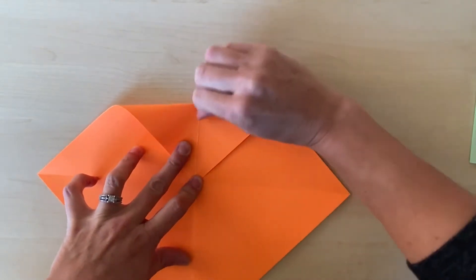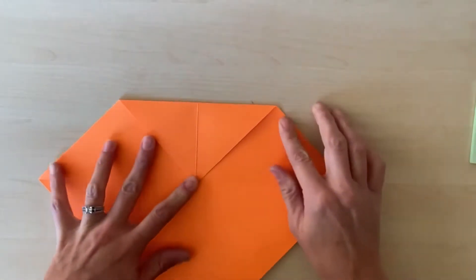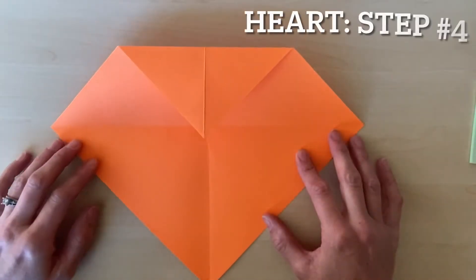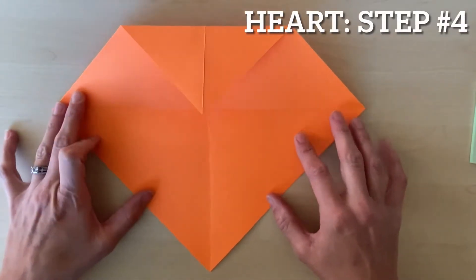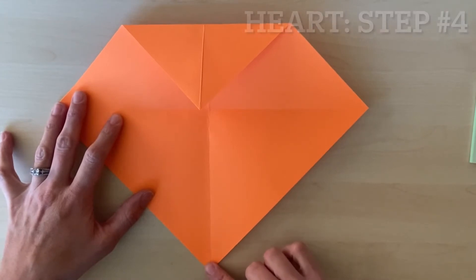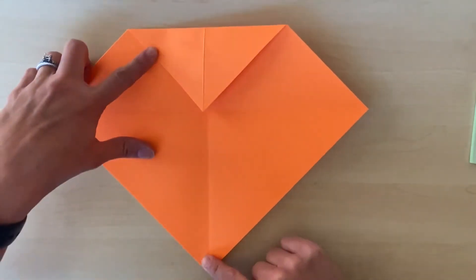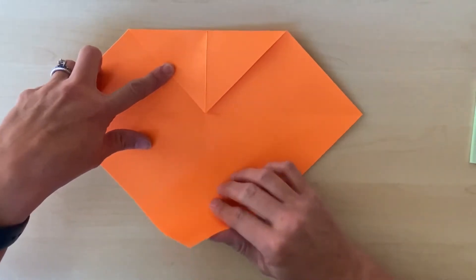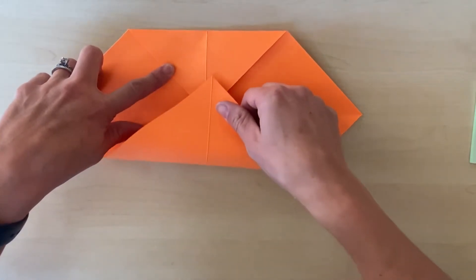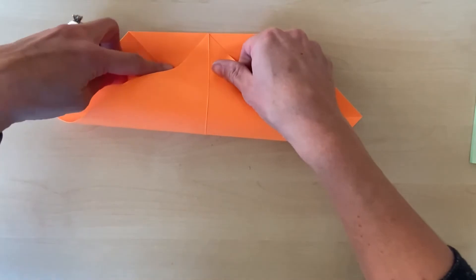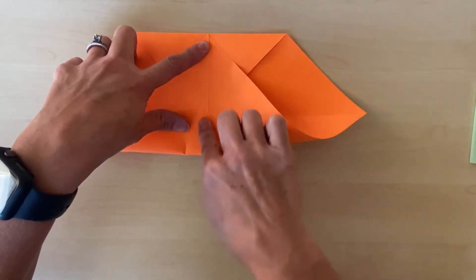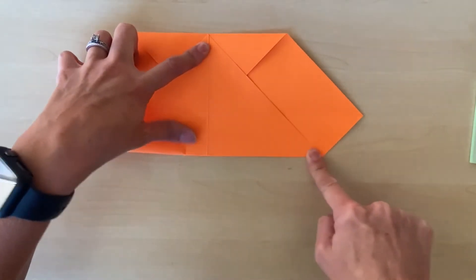My next step is taking this bottom corner and folding it to the top, going past the center and hitting that top section. I'm going to follow the line down and smooth the crease.